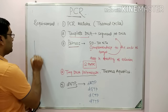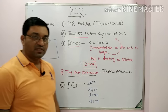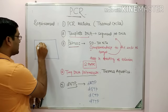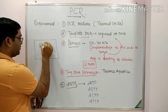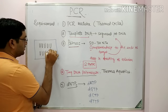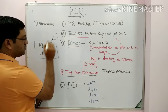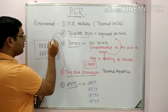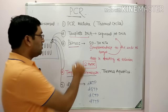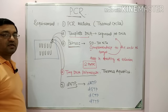The thermal cycler is responsible for temperature regulation, and there are tubes in this thermal cycler. These tubes contain the reaction mixture: template DNA strand, primers, Taq DNA polymerase, and deoxynucleotide triphosphates. All these molecules are provided in a tube in the thermal cycler.